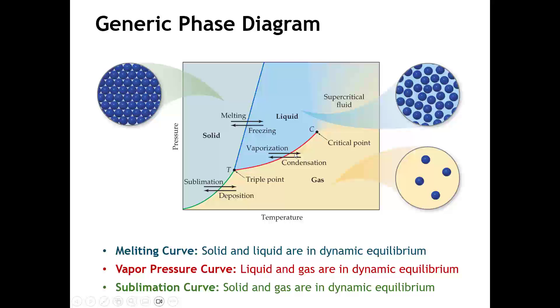If we're on this red line, which is called the vapor pressure curve, on that line, the liquid and the gas are in dynamic equilibrium. Notice also that where the vapor pressure line ends, that's called the critical point. And if we're at temperatures higher than the critical temperature, then we know that a liquid can't exist.